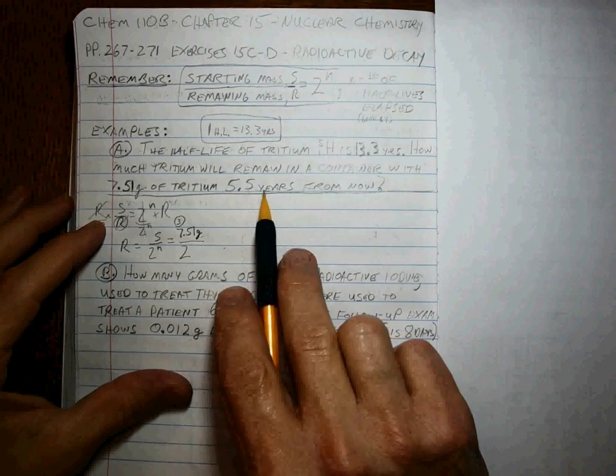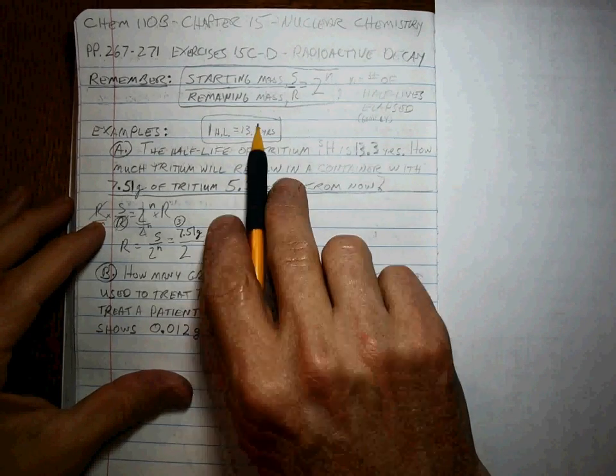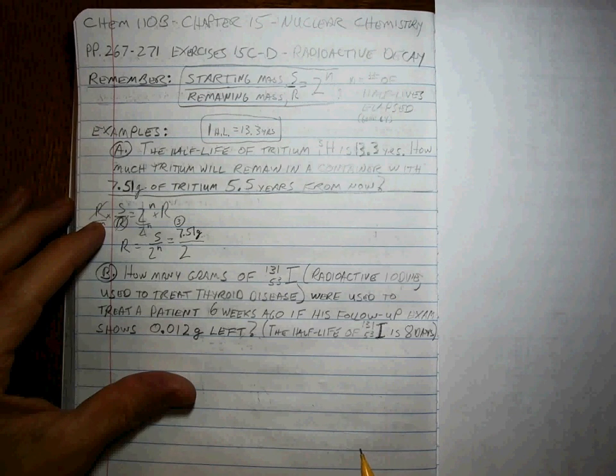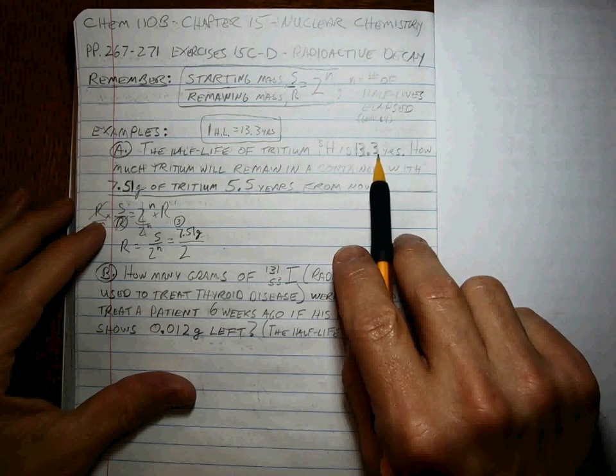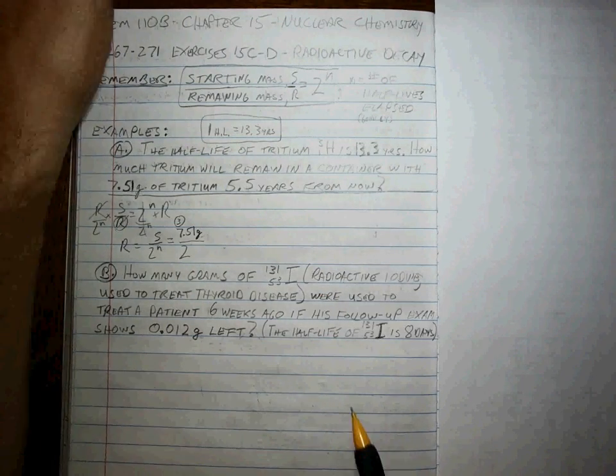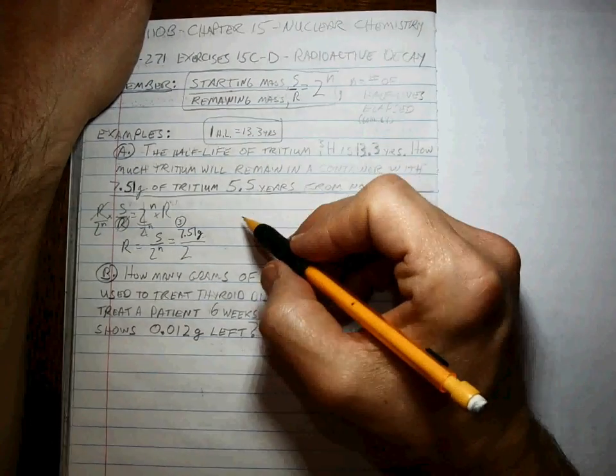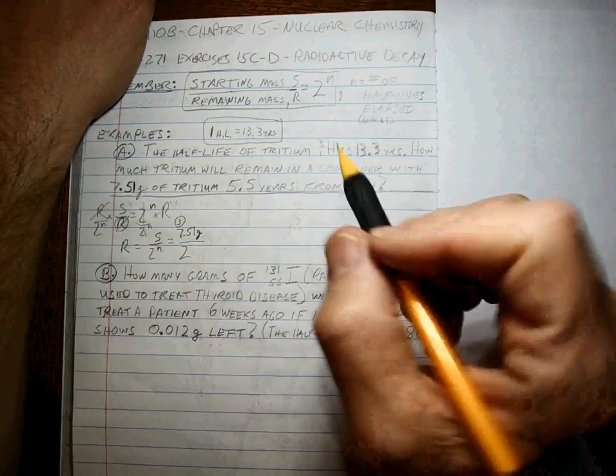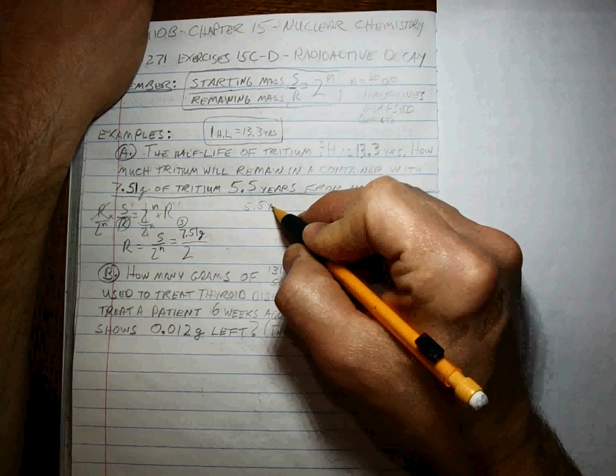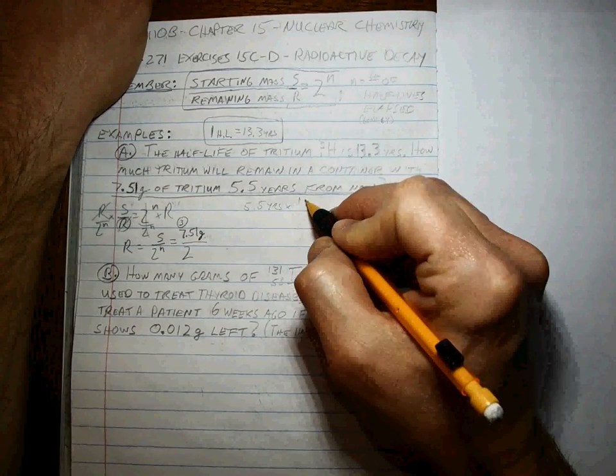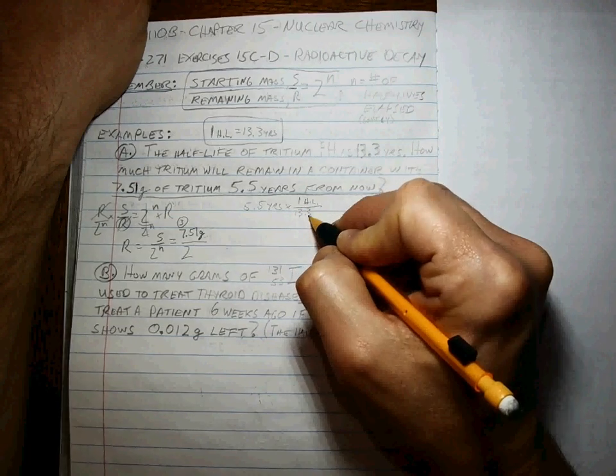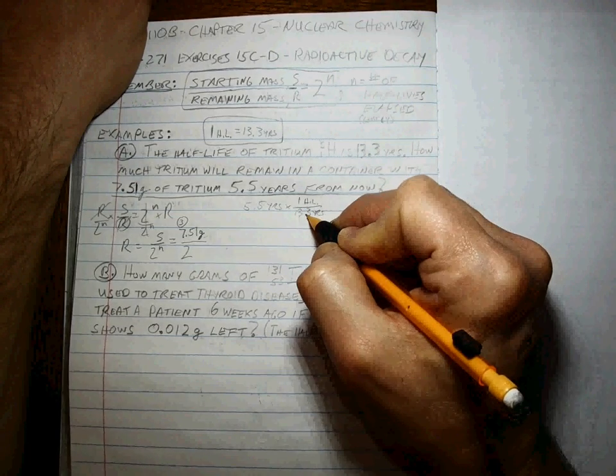It's 5.5 years. One half-life? No, it's less than half of a half-life. 26.6 years is two half-lives. So how do we go about looking at this? We use this as a conversion factor: 5.5 years times one half-life for every 13.3 years equals...